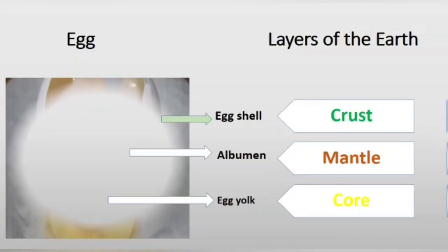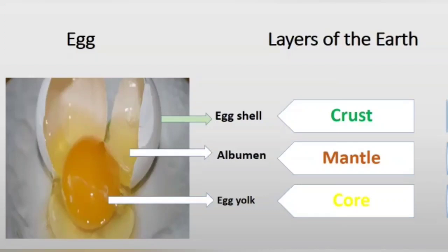Now students, if we compare the layers of the Earth with an egg, we can come to this point. We know that birds lay eggs and the baby comes out from that egg. So if we compare the egg with the layers of the Earth, the outermost covering of the egg, which is hard, is called the egg shell. Inside that, there is the fluid called albumin. And the innermost part of the egg is called the egg yolk. So our Earth is like an egg — the outermost egg shell we call the crust, which is hard; inside the crust there is the mantle; and then the innermost is the core.